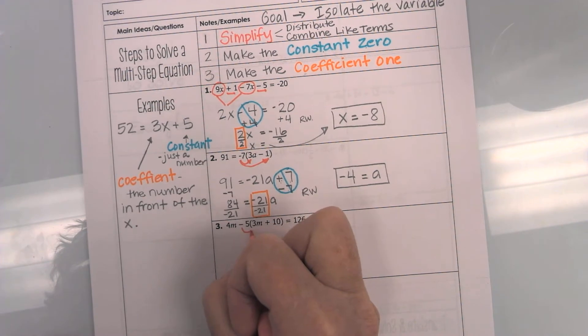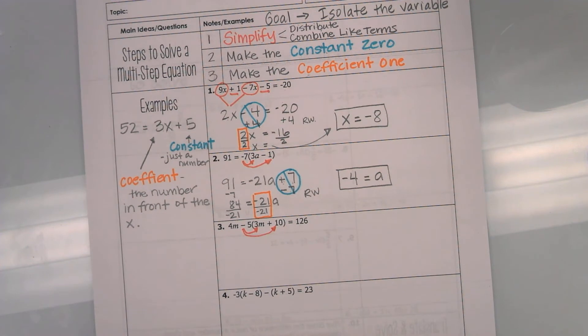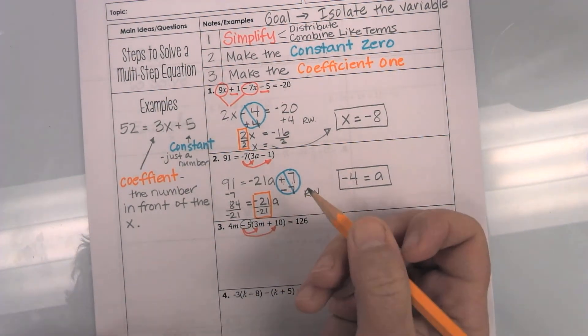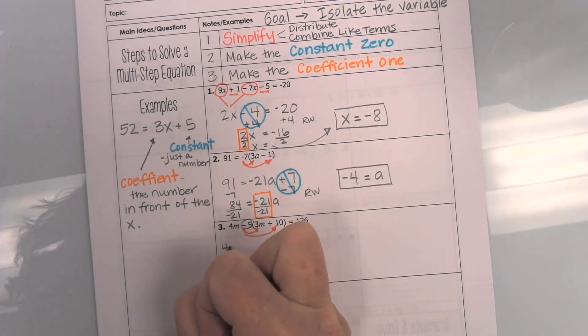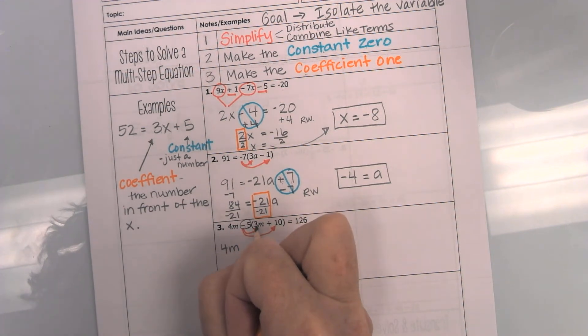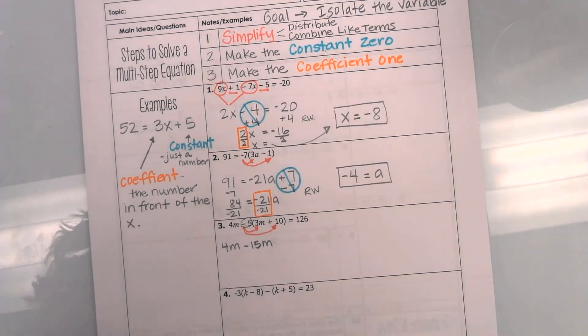We always distribute first because I have got to unlock those parentheses. So, I am going to take this negative 5 and multiply it by both numbers on the inside. Now, remember, that negative sign does go with the 5. Okay, so I don't want to forget the 4m in the beginning. If I don't write it now, I totally forget. Okay, negative 5 times a positive 3 is a negative 15, and there is 1m. Don't want to leave it hanging.